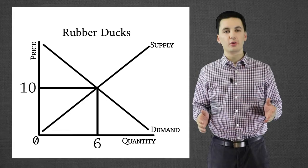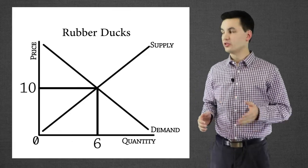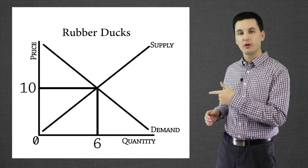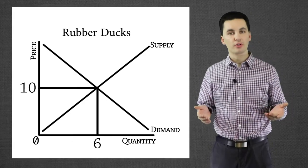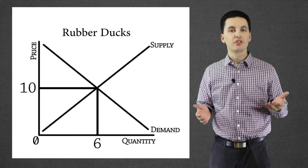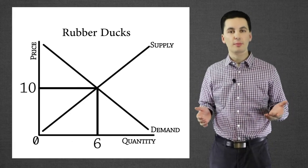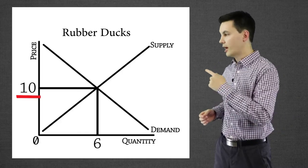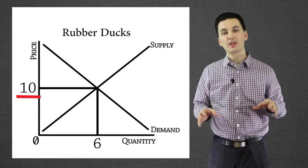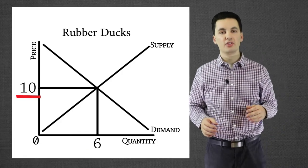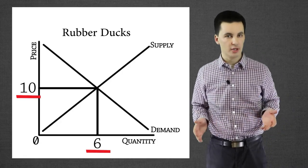On the screen right now you can see I have a supply and demand chart for rubber ducks. We can see that our equilibrium is at $10, and at $10 I'll be selling six rubber ducks.